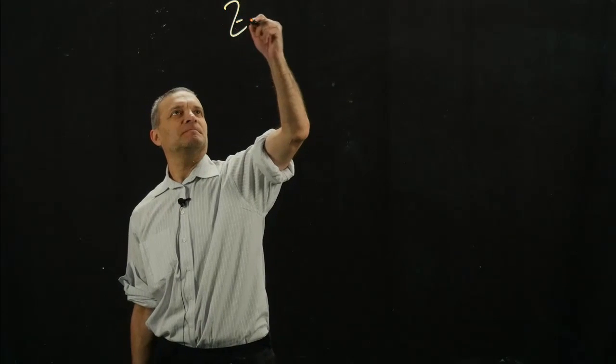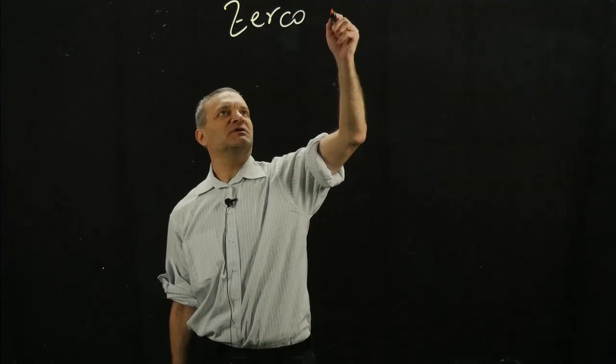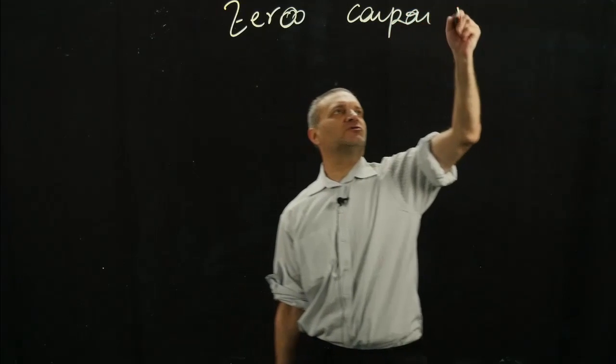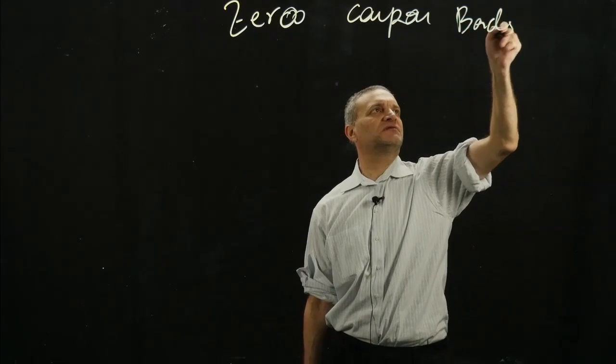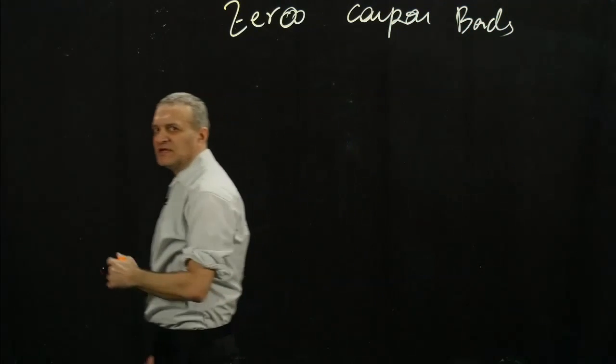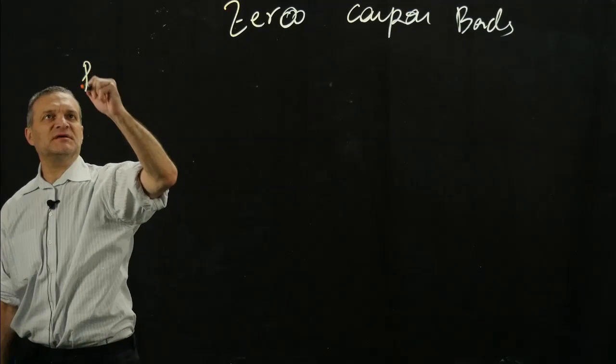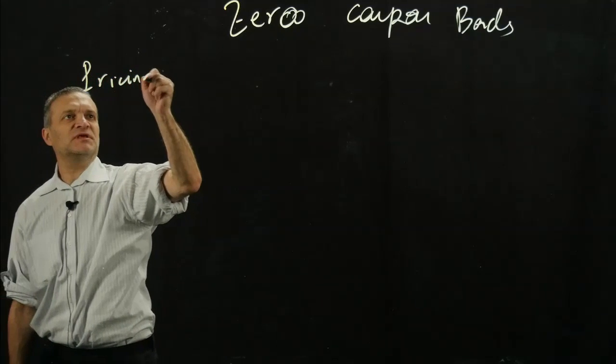Hey, Fixed Income guys. New semester, new videos. Hope you had good lectures. So what I'm going to talk about today is zero-coupon bonds, what we said in class. I'm also going to talk about something we may cover in the last lecture, which is basically the pricing using the continuous method.